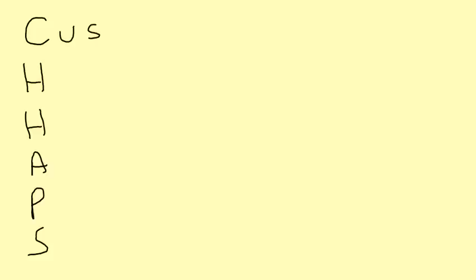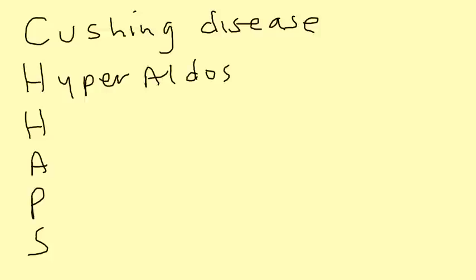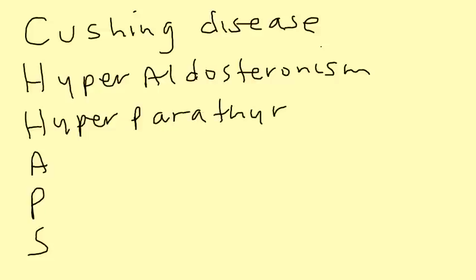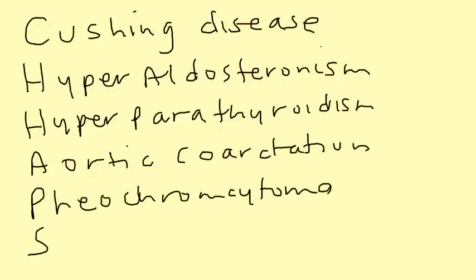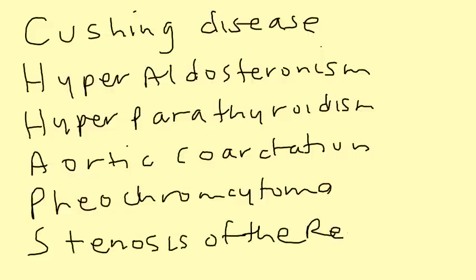There's a mnemonic that talks about the different causes of secondary hypertension: CHAPS. Cushing's disease, hyperaldosteronism, hyperparathyroidism, aortic coarctation, pheochromocytoma, and stenosis of the renal artery. We're going to talk about each one.